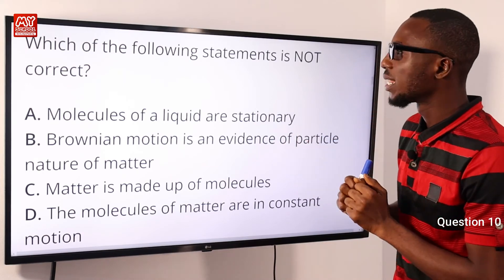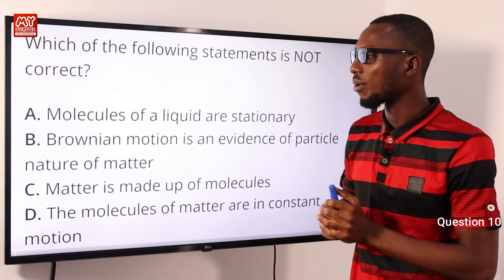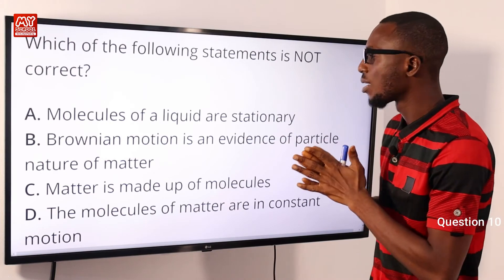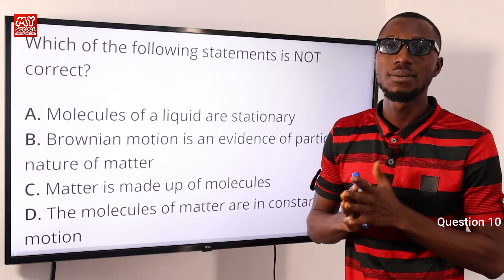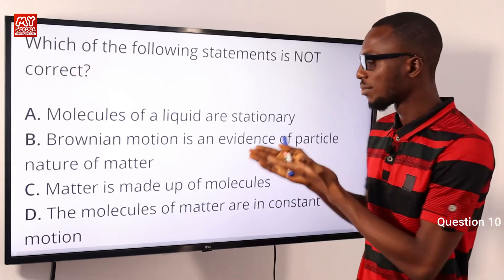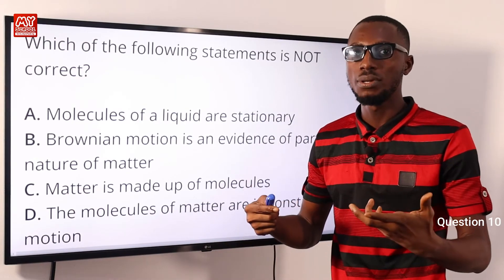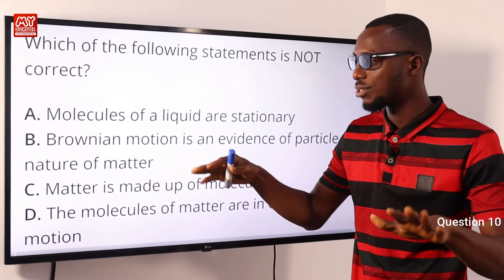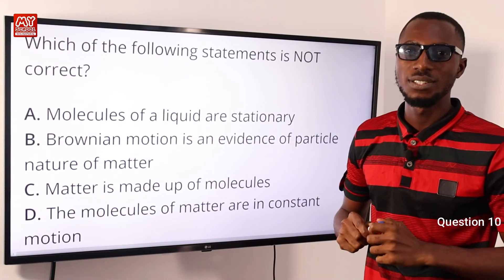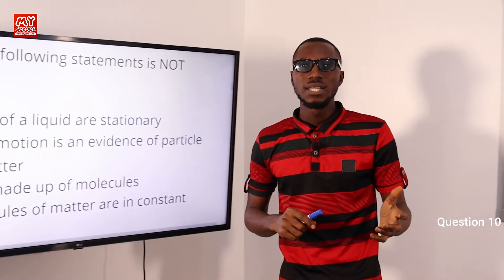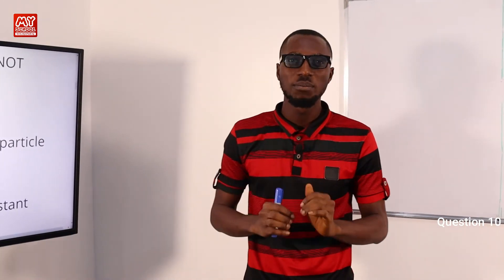Question 10: which of the following statements is not correct? Statement A — molecules of a liquid are stationary — is incorrect, as Brownian motion is evidence of the particle nature of matter. Options B, C, and D are valid: Brownian motion is evidence of particle nature, matter is made up of molecules, and molecules are in constant random motion colliding elastically. The incorrect statement is option A.